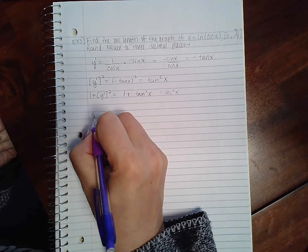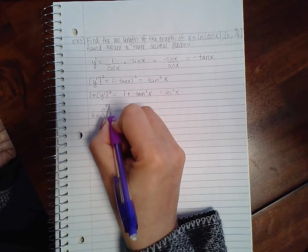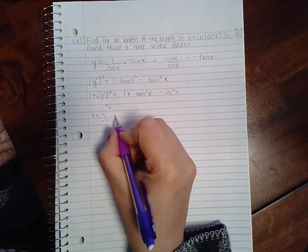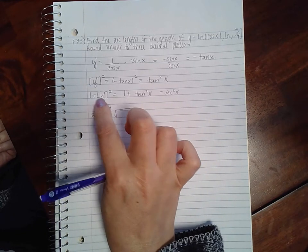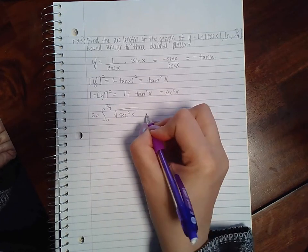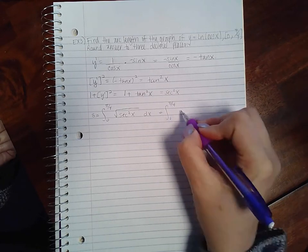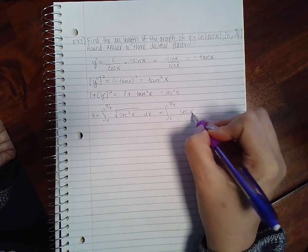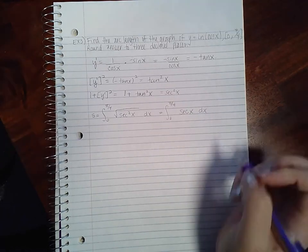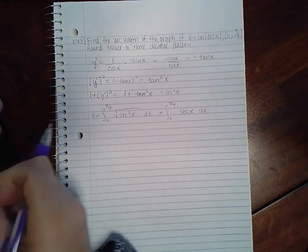So when I go to use the formula, I'm going to have my arc length is from 0 to π/4 of the square root of 1 + y prime squared which is sec². And then the square root and the square will undo each other leaving me with the integral of sec(x) dx.